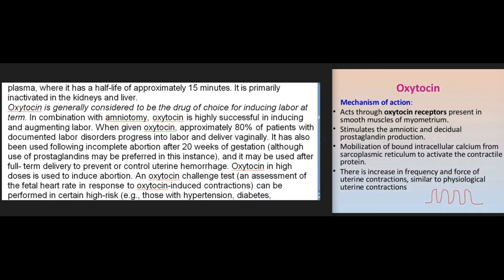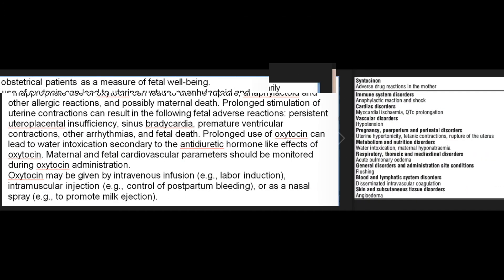In combination with amniotomy, oxytocin is highly successful in inducing and augmenting labor. Approximately 80 percent of patients with documented labor disorders given oxytocin progress into labor and deliver vaginally. It has also been used following incomplete abortion after 20 weeks of gestation, although use of prostaglandins may be preferred in this instance. It may be used after full-term delivery to prevent or control uterine hemorrhage. In high doses, oxytocin is used to induce abortion. An oxytocin challenge test can be performed in high-risk obstetrical patients — such as those with hypertension, diabetes, or preeclampsia — as a measure of fetal well-being.